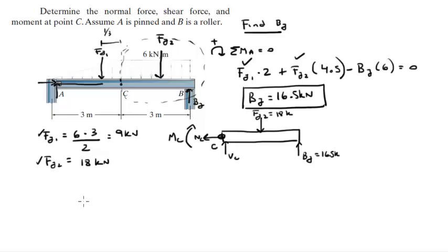So let's find them. Assuming this orientation for the x and y, you know that the sum of the forces in the x equals 0, so the normal is equal to 0. Sum of the forces in the y equals 0.